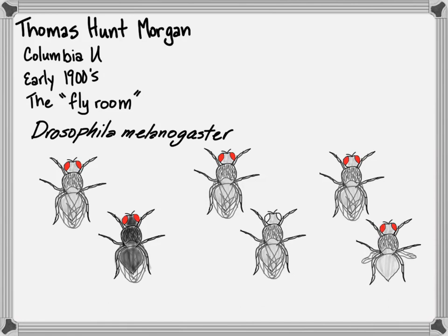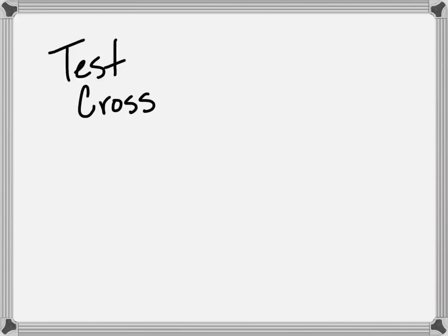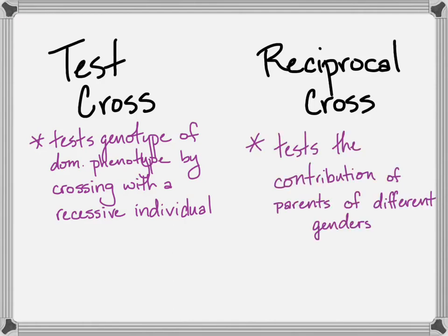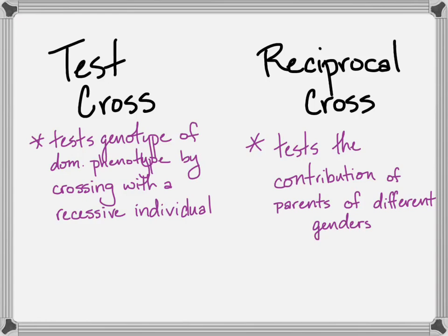The part of their work that is relevant to our unit is the part where they used test crosses, which is just where a dominant individual was crossed with a recessive phenotype individual, and reciprocal crosses, which were crosses done to test the contribution of different genders to the overall offspring ratios. So we'll start with a test cross result that was unusual. The team had a wild-type gray and normal winged fly that was heterozygous, and they had a black vestigial winged fly that must have been homozygous recessive for both traits.